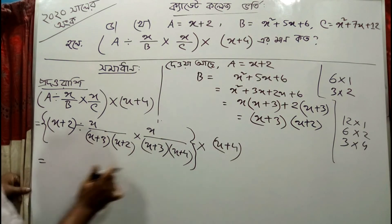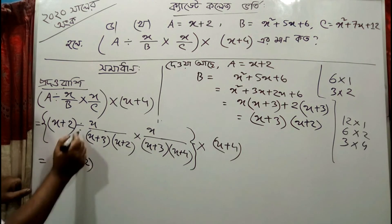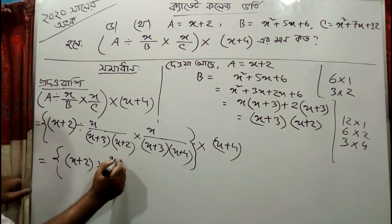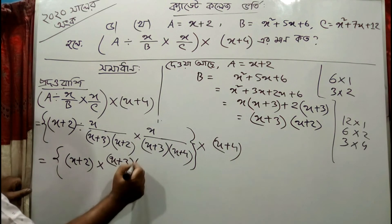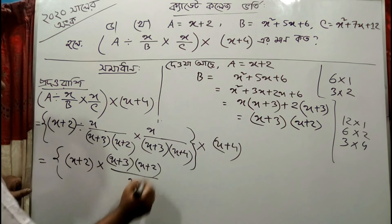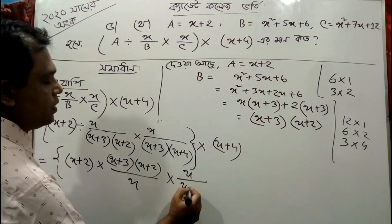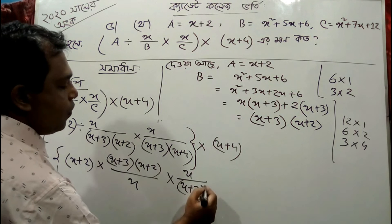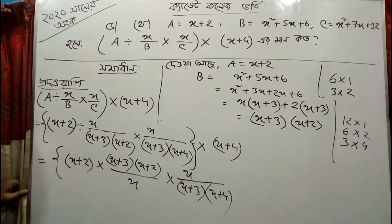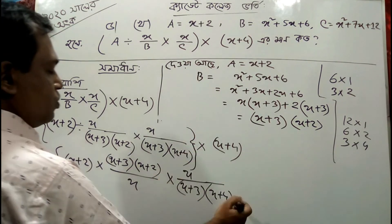So I'm up with R, x plus 2. So I'm up with x plus 2. X plus 3 into x plus 2. I'm up with x plus 3 into x plus 4. Okay, this is the second package. I'm up with 2, I'm up with y plus 2.